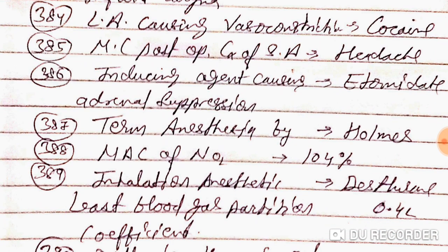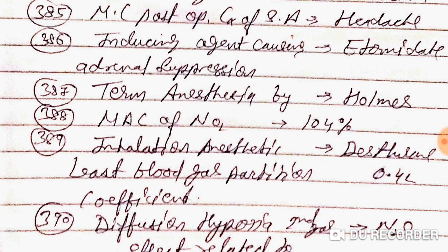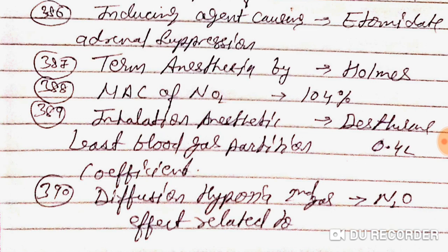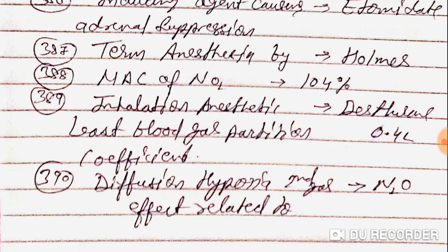Local anesthesia causing vasoconstriction — that is cocaine. The most common post-operative complication of spinal anesthesia is headache. The inducing agent causing adrenal suppression is etomidate.